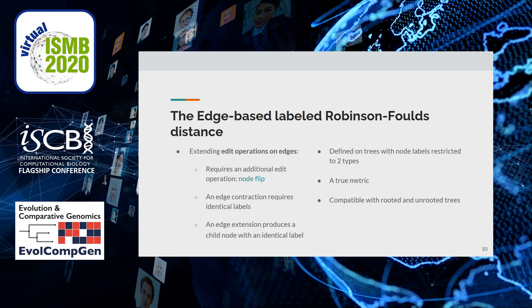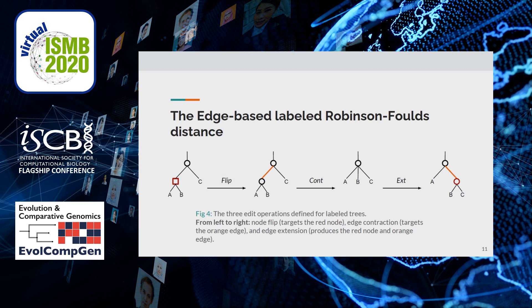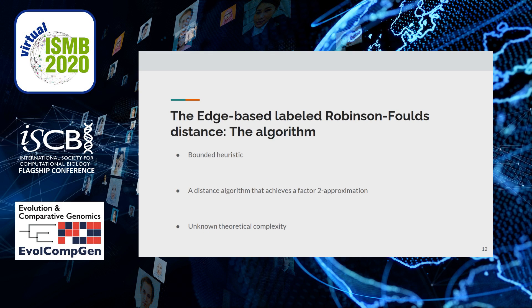Moreover, the edge-based labeled Robinson-Foulds distance is defined for rooted and unrooted trees with node labels restricted to two types. We illustrate in Figure 4 the mechanisms of our new operations. It can be observed that a node-flip may be required before an edge can be contracted. The algorithm we develop to compute ELRF is a bounded heuristic for general trees that achieves a factor-2 approximation. Its theoretical complexity is unknown.